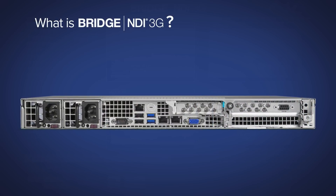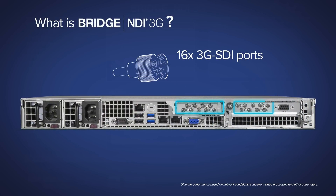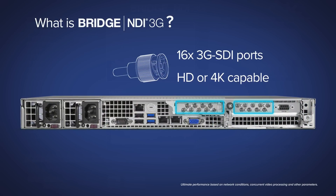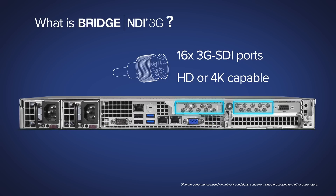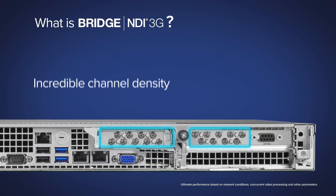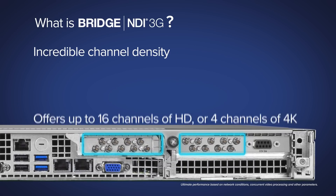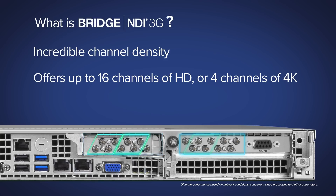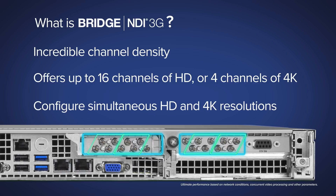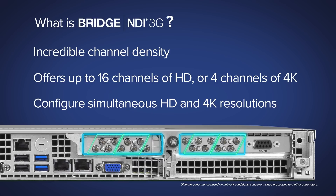Bridge NDI 3G offers 16 channels of 3G SDI, providing the greatest channel density for HD signals. For Ultra HD 4K, Bridge NDI 3G can be configured to support 4 streams, even mixing HD and 4K resolutions, all in the same box.